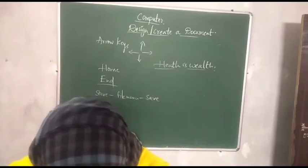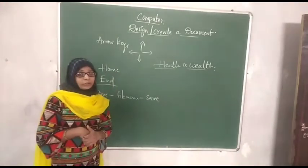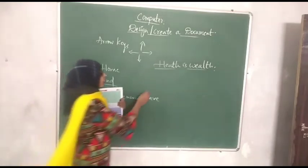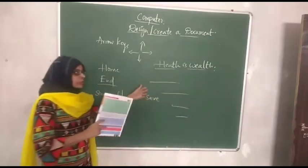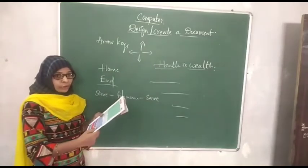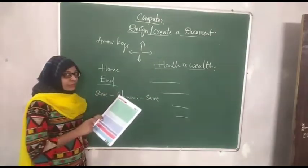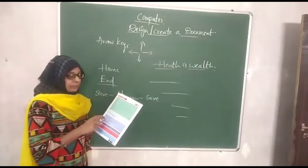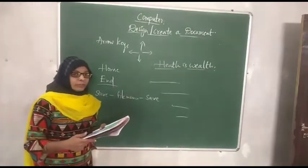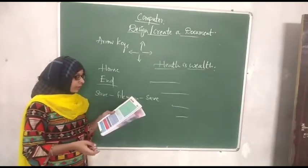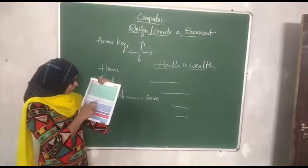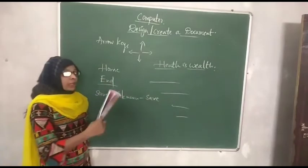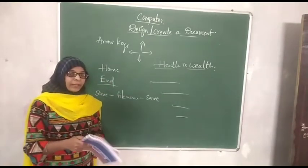Let us see how to format a document. A number of options are given. If you want to change the font or handwriting, you can select the paragraph. There is also an option called Alignment. We have Left Alignment, Center Alignment, Right Alignment, and Justified Alignment. If you select Left Alignment, the lines of your paragraph will become closer to the left margin.